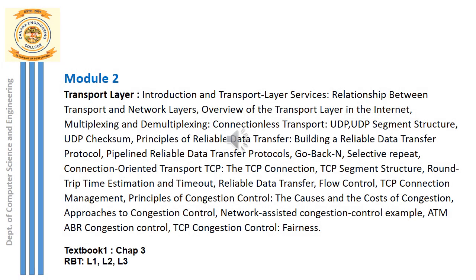Module 2 is all about the transport layer. The concepts discussed include transport layer services, the comparison between transport layer and network layer, overview of transport layer in the internet, multiplexing and demultiplexing in both connectionless transport UDP and connection-oriented transport TCP. UDP segment structure, UDP checksum, and principles of reliable data transfer protocol are also covered, along with pipelining reliable data transfer protocols like Go-Back-N and Selective Repeat.